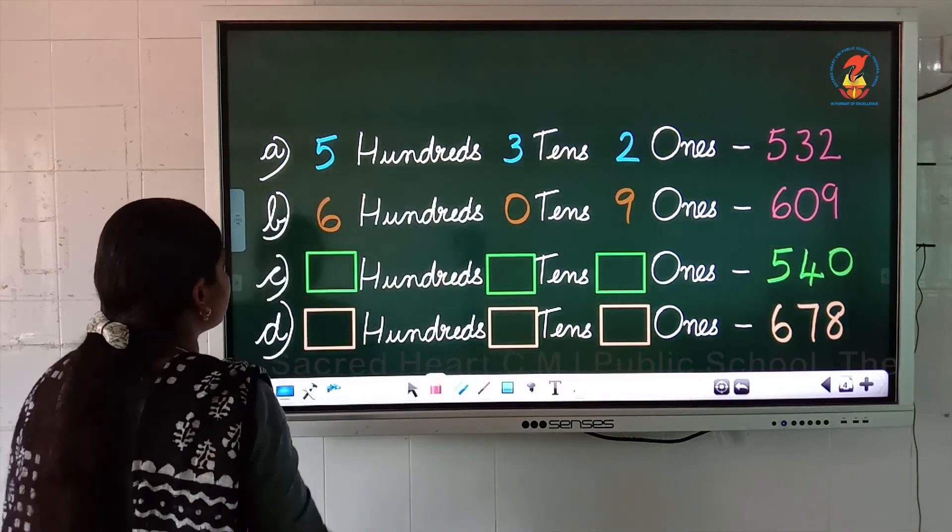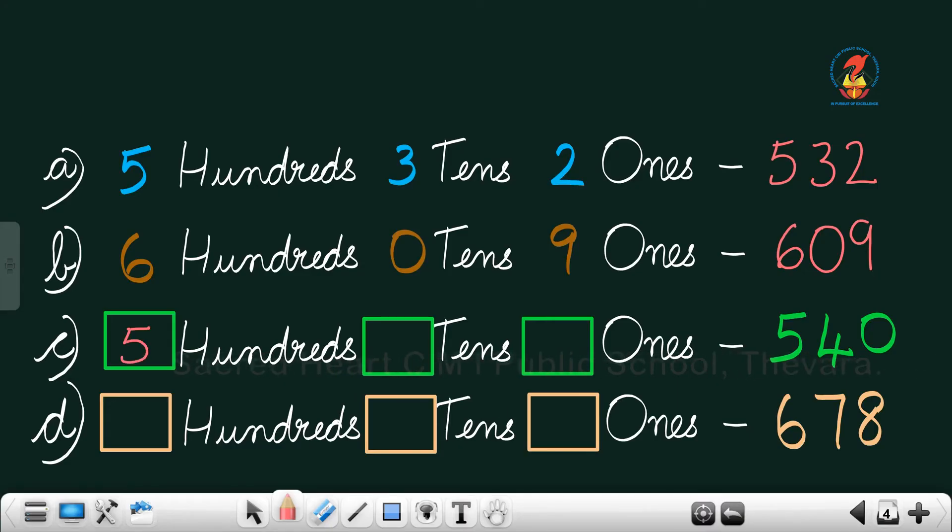So, we want to write 5 hundreds, 4 tens and 0 ones. Okay.